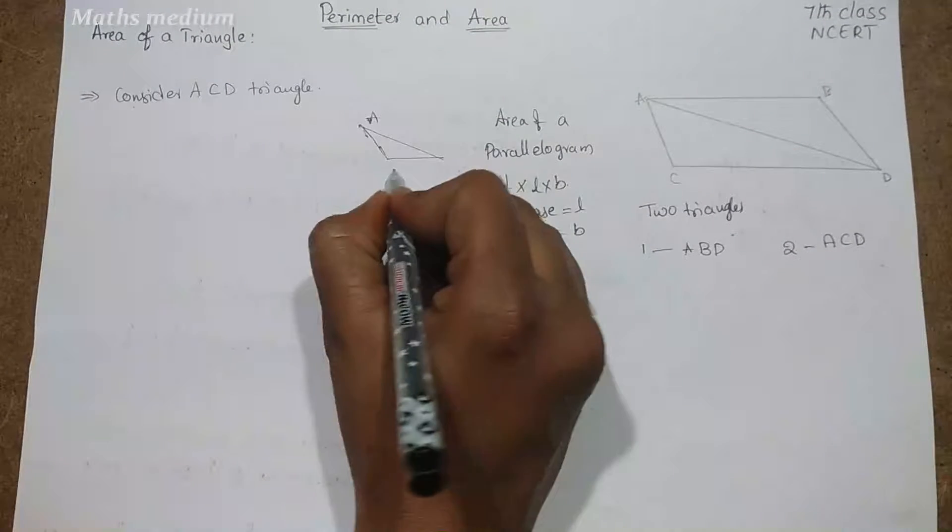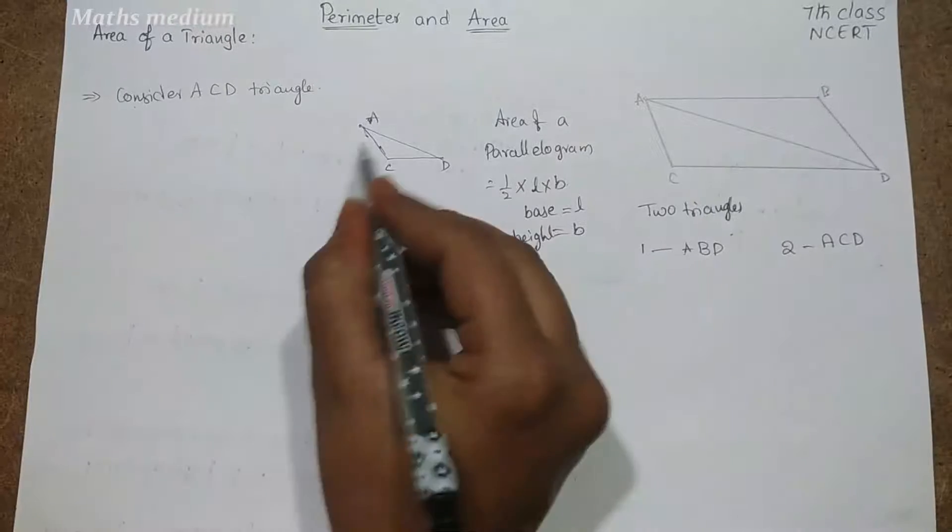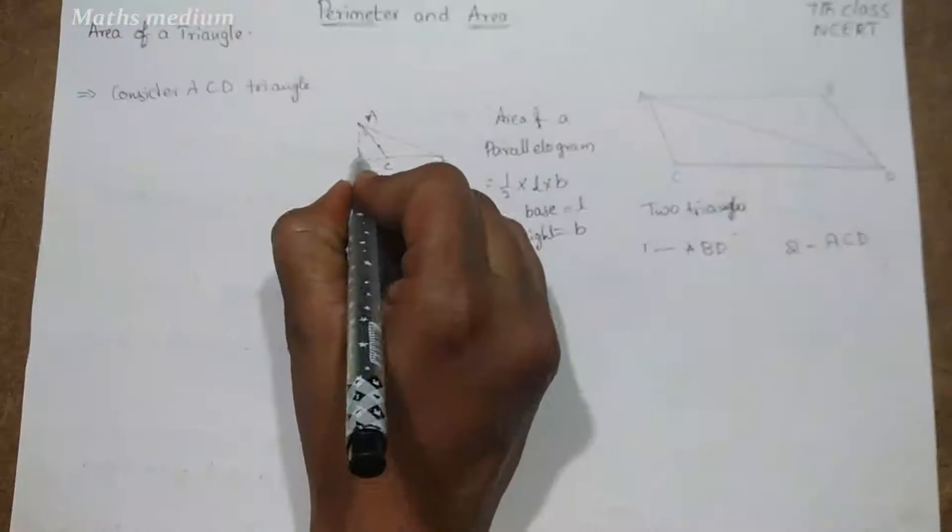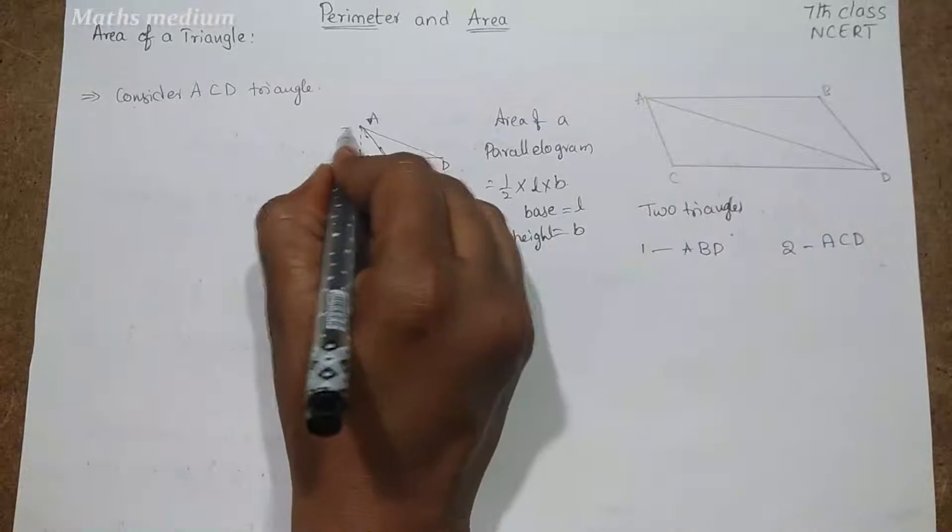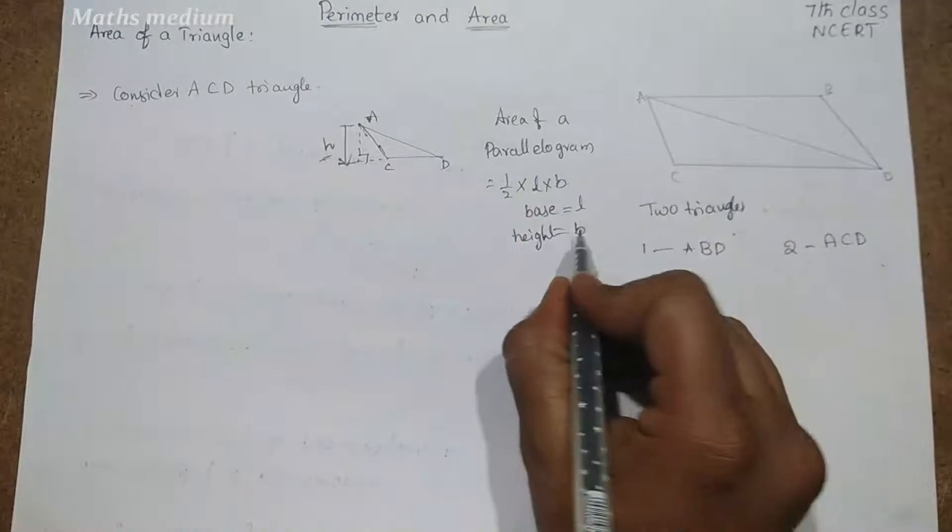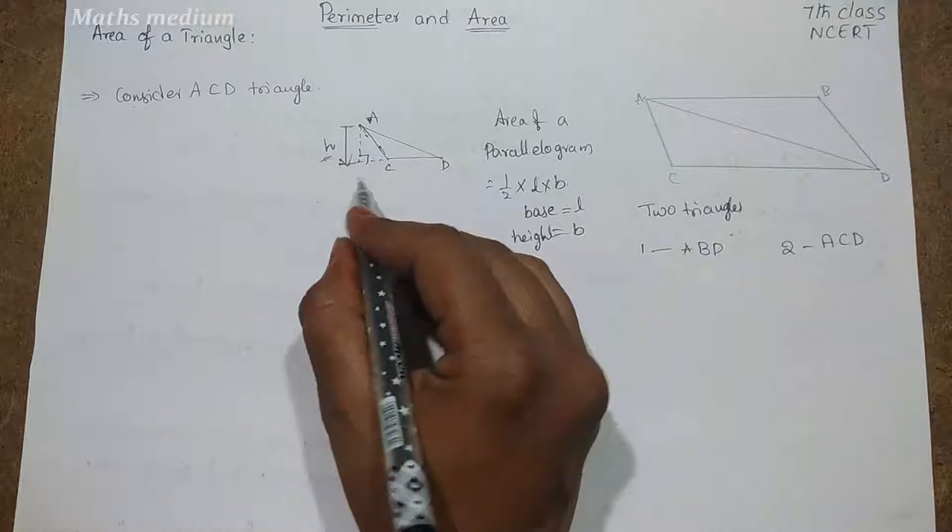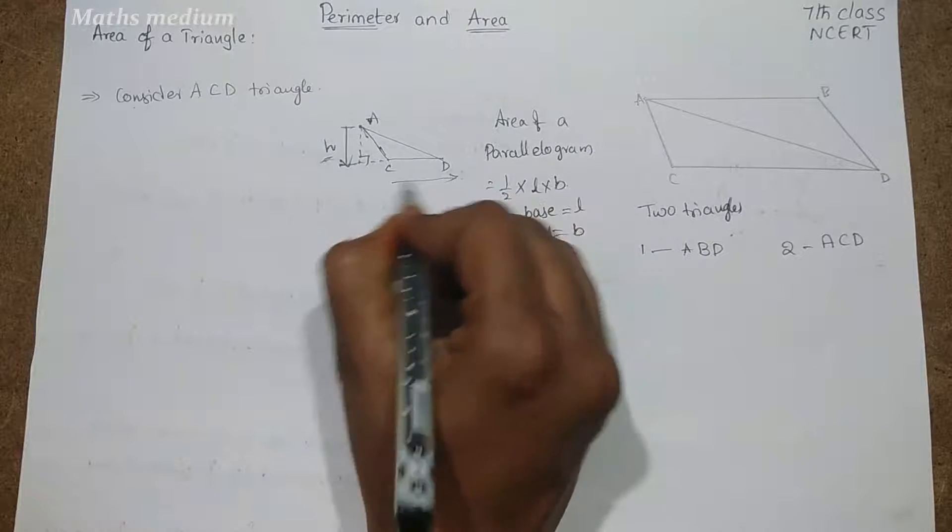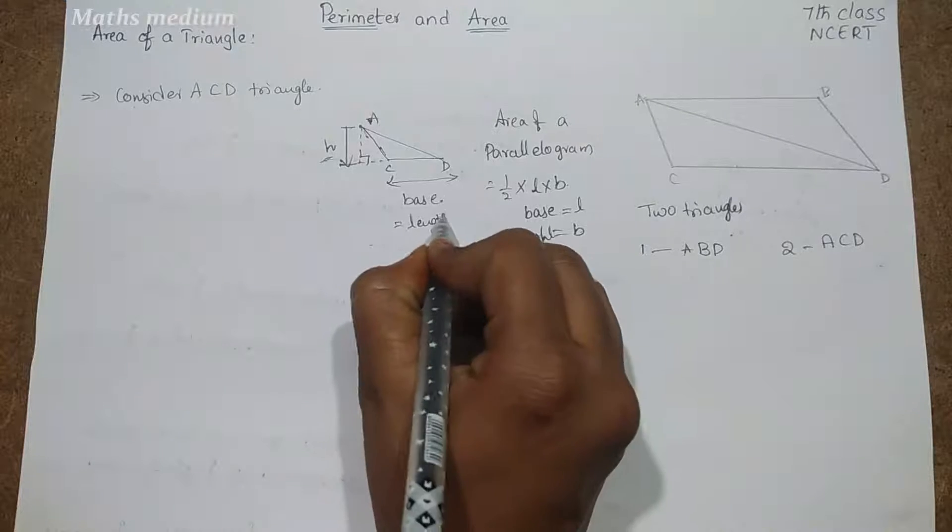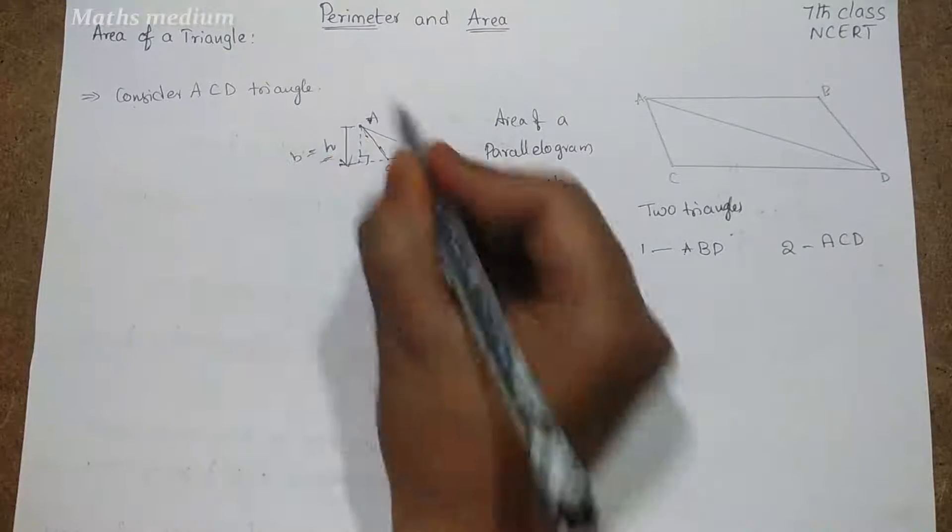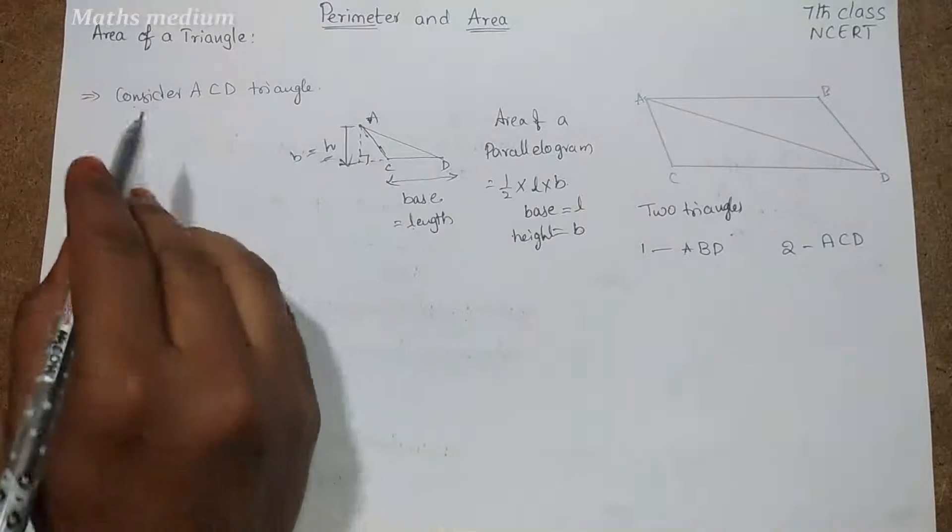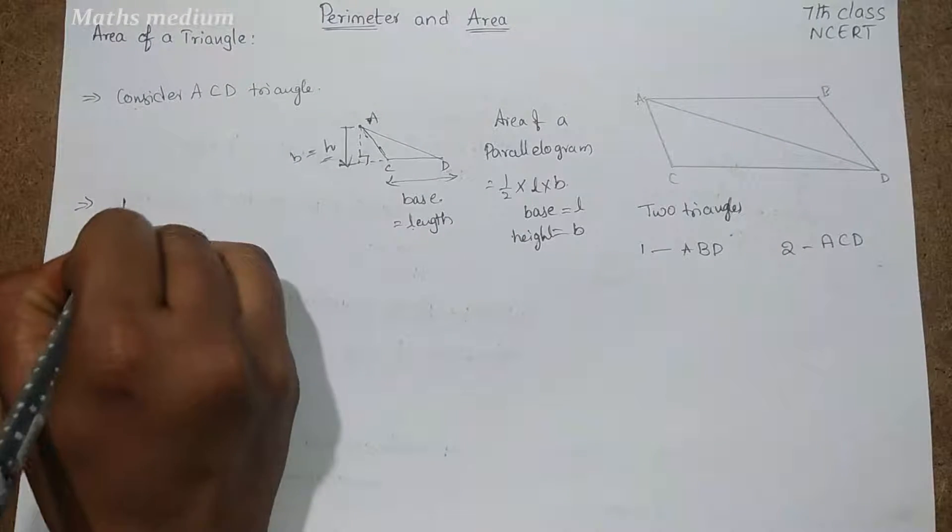Right, so this is A, this is C, and this is D. Now I am going to take this as extension like this. So this is a perpendicular bisector. So now we are going to call this as height. This height is also called B. Now this base is called length. So this is breadth and this is length. So here same formula apply to the triangle also: half into base into height.